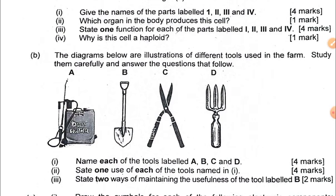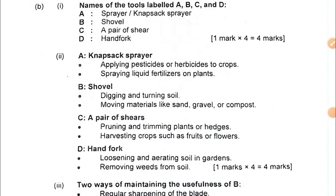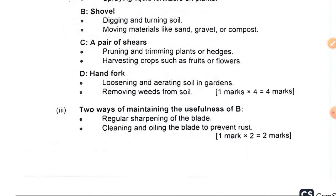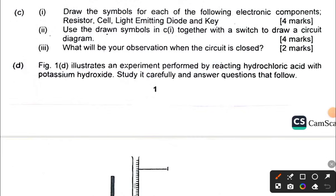For question 1b, you are given farm tools A to D and must study them carefully, then give one use of each. You also need to state two ways of maintaining the usefulness of B. The tools include a sacksbury, shovel, pair of shears, and a hand fork.